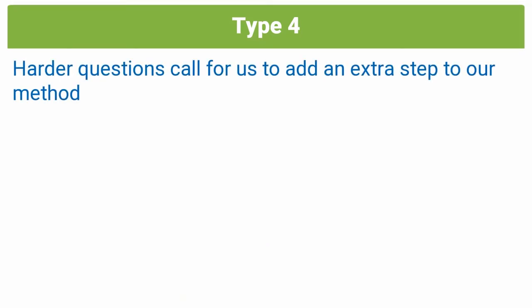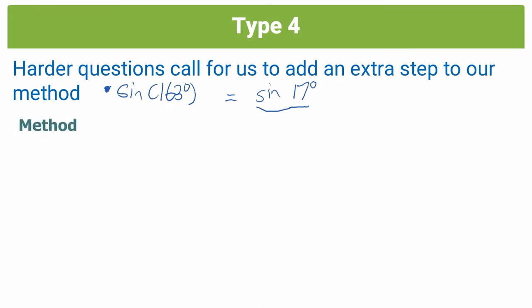In harder examples, we need to add an extra step to our method. The previous example was easy because all the angles were special angles and we knew their values. But if you were given sine 163 degrees, even after using supplementary reduction formula you'd get sine 17 degrees, and without a calculator we can't know the value of sine 17. So how do we approach a problem like this? This brings us to step 5 of our method.